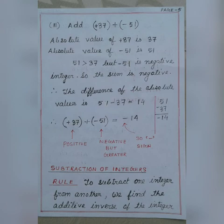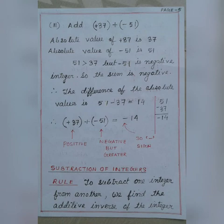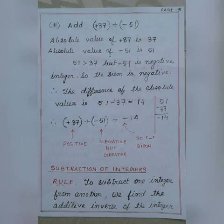Checking with another example: plus 37 plus minus 51. The absolute value of 37 is 37 and the absolute value of minus 51 is 51. We find the difference of 51 and 37, which equals 14. Now 51 is greater than 37, but 51 is a negative number. As the greater number bears a negative sign, our answer is also negative. Therefore, plus 37 plus minus 51 equals minus 14.